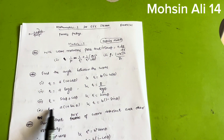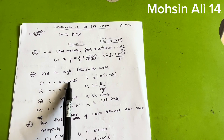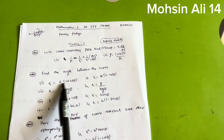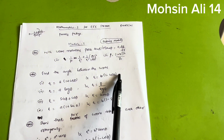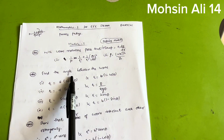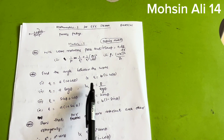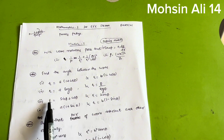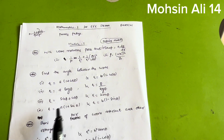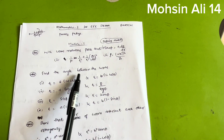The curves to practice for angle between curves include: r = a(1 + cosθ) and r = b(1 − cosθ) — this is the most important one, most frequently asked by VTU. Also practice: r = a·log(θ) and r = θ/log(θ), r = sinθ + cosθ and r = 2sinθ, and r = a(1 + sinθ) and r = b(1 − sinθ).